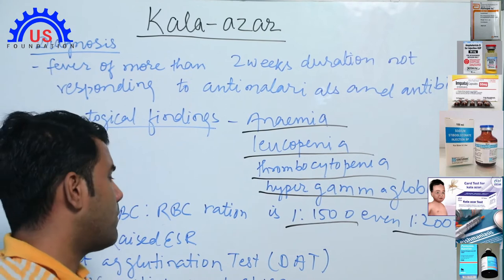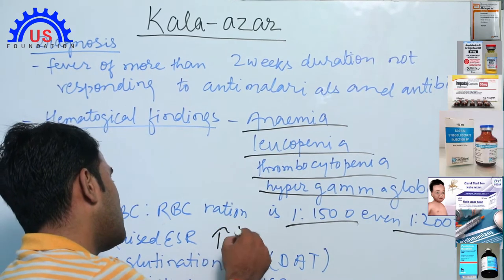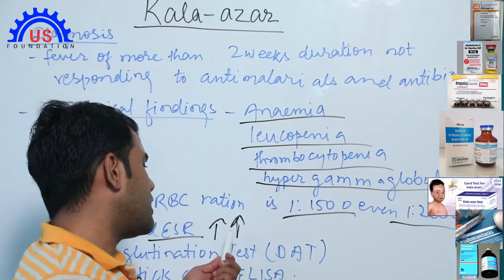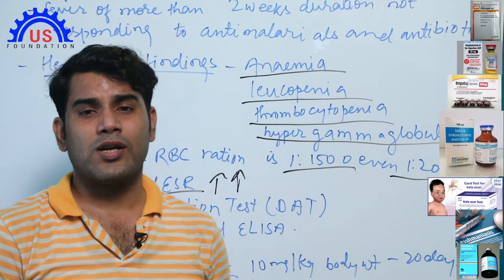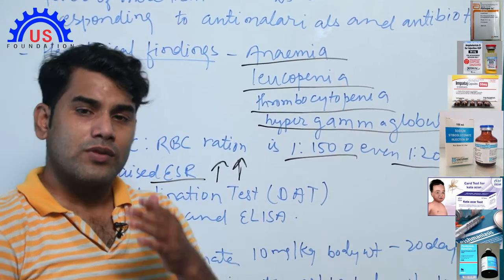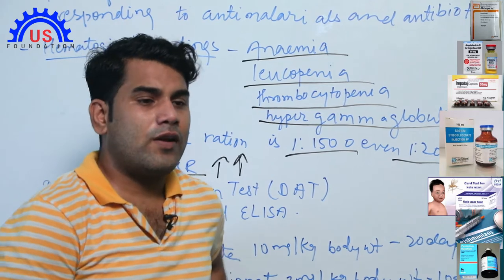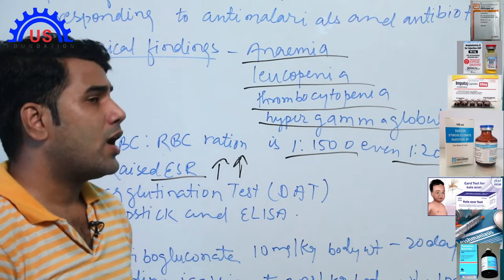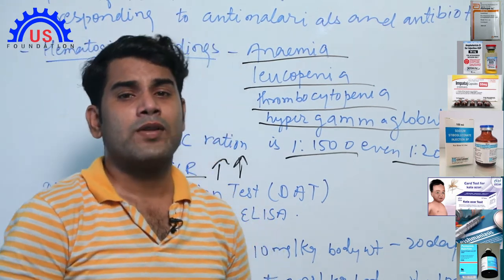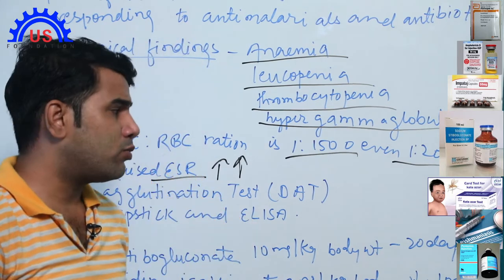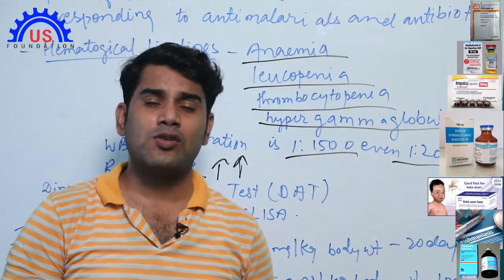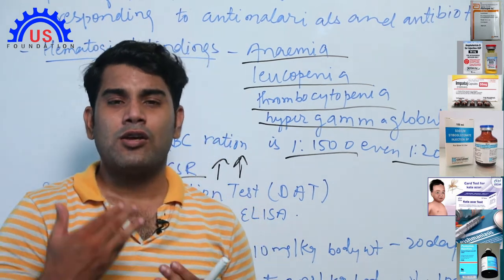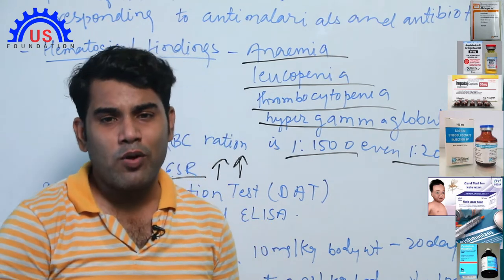ESR (erythrocyte sedimentation rate) will also be very elevated. ESR is a clinical marker that shows there is a major problem somewhere in the body — infection is present. In any infected condition, ESR will be raised. So these are the hematological findings: anemia, thrombocytopenia, leukopenia, hypergammaglobulinemia, poor WBC:RBC ratio, and elevated ESR. However, these findings can also appear in other diseases.